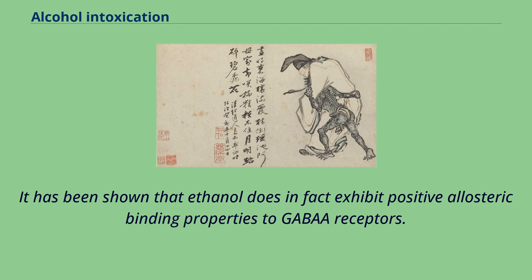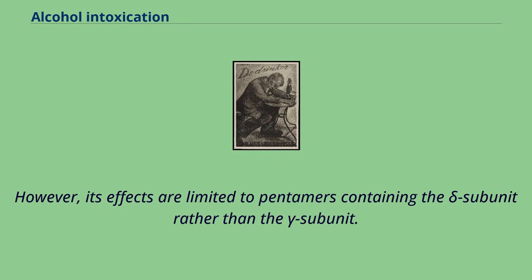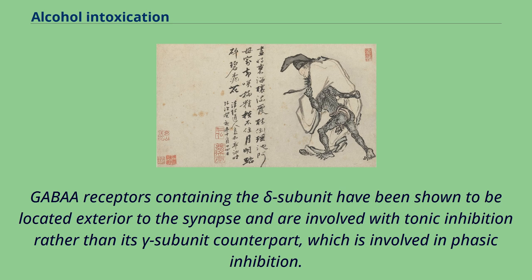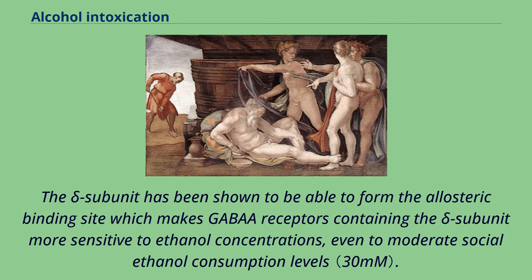It has been shown that ethanol does in fact exhibit positive allosteric binding properties to GABA receptors. However, its effects are limited to pentamers containing the delta subunit rather than the gamma subunit. GABA receptors containing the delta subunit have been shown to be located exterior to the synapse and are involved with tonic inhibition rather than the gamma subunit counterpart, which is involved in phasic inhibition. The delta subunit has been shown to form the allosteric binding site, making GABA receptors containing the delta subunit more sensitive to ethanol concentrations, even at moderate social ethanol consumption levels.